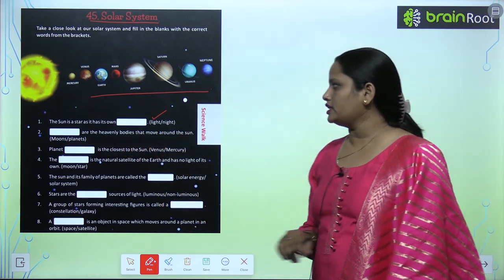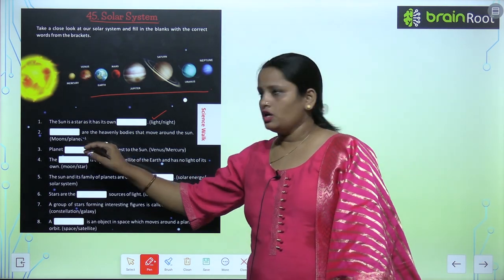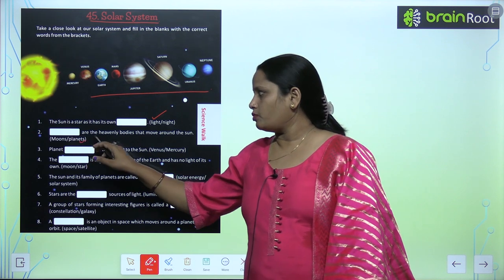Dash are the heavenly bodies that move around the sun. Sun ke sato taraf ghoomta hai. Kaun ghoomta hai? Moon or planets. So, planets.